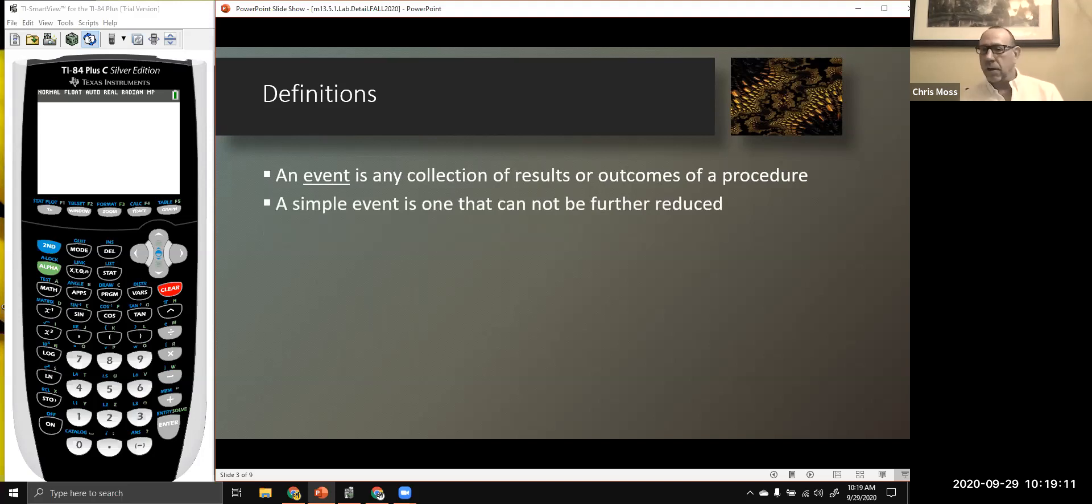Now a simple event is one that cannot be further reduced. When you flip that coin, it's either going to come up heads or tails. It's either one or the other. Neither one of those can be further reduced. It never lands on its edge, nothing like that. A sample space is a list of all possible simple events from a given procedure. I'll point those things out as we go through our examples.